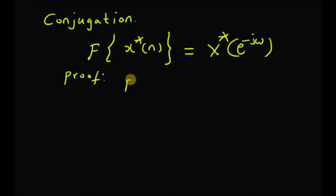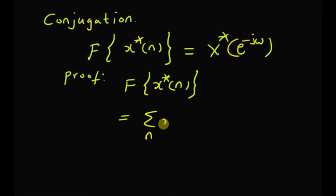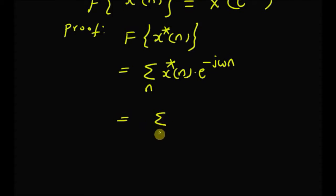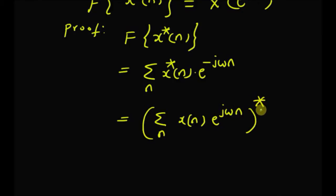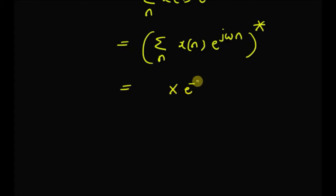Starting with the LHS, the DTFT of x*(n): by definition, this is the sum of x(n)* multiplied by e^{−jωn}, which can be rewritten as the summation of x(n) multiplied by e^{jωn}, all conjugated. This is equal to X(e^{−jω})* because here we have minus of minus omega, giving us X(e^{−jω}) with the whole conjugate applied.